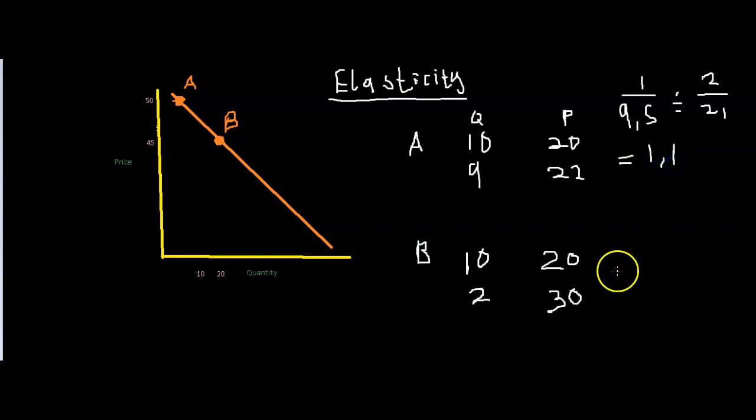Perfect. Now let's see this one. To calculate this one, the difference in quantity, that is 8, over the sum, so 10 plus 2 is 12 divided by 2, that is 6. So 8 over 6 divided by, now the difference is 10, 10 over the average sum, 30 plus 20 is 50 divided by 2, that's 25. So 8 divided by 6 divided by 10 over 25. I got 3.3 as my answer, 3.3.